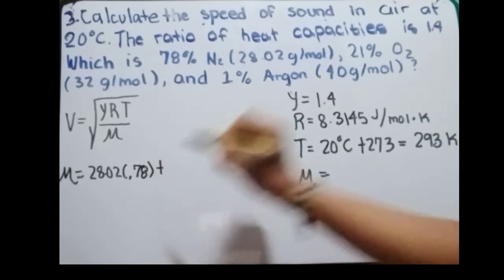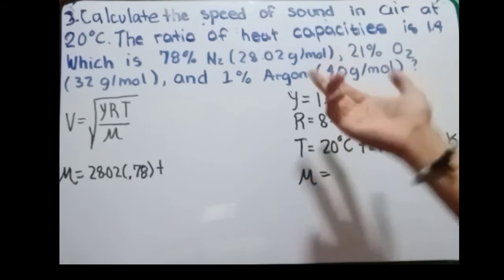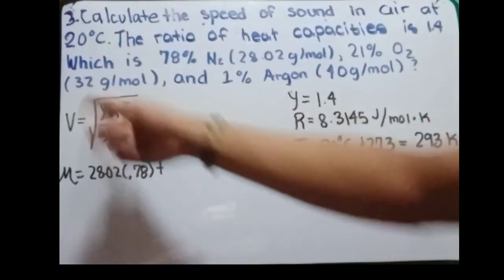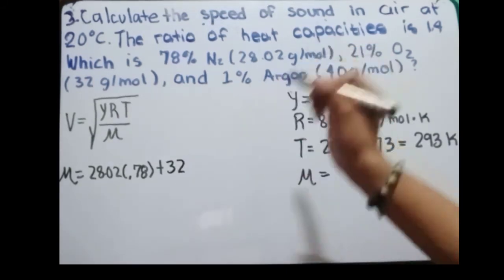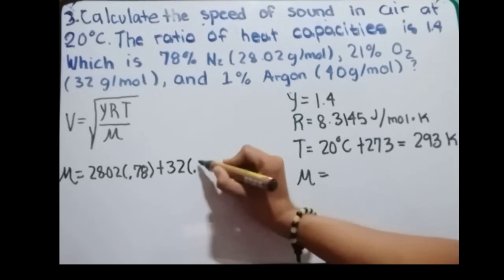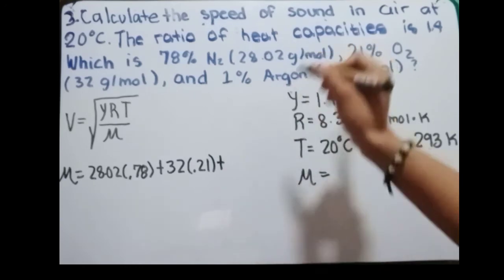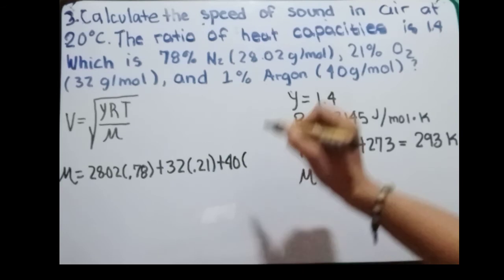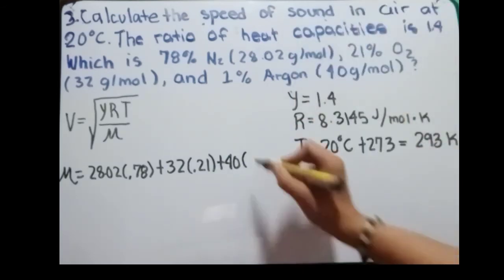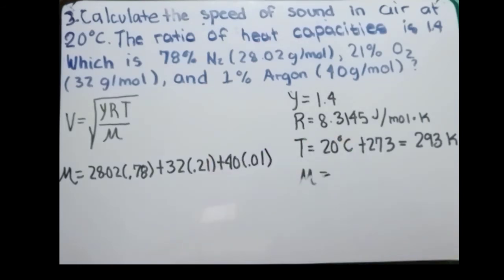Plus oxygen, which is 16 grams per mole. Since it is oxygen gas we multiply by 2, giving 32 grams per mole. Oxygen gas is 21%, so we multiply by 0.21. And argon is 40 grams per mole at 1%, so we multiply by 0.01.